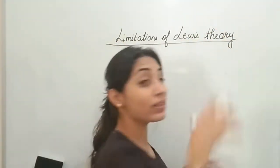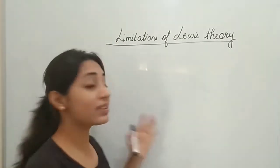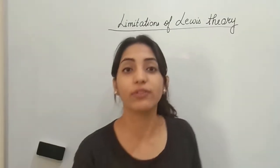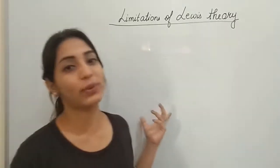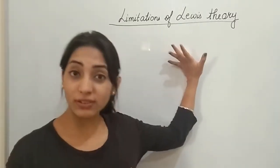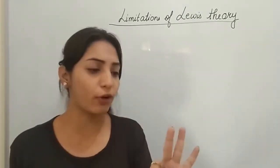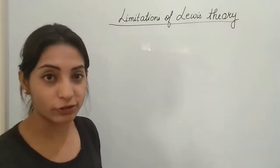You know because of all these limitations which I will be discussing with you today, this theory got failed and we rejected it and moved on with a new theory. The reason why we have to study this is because this question, the limitations of Lewis dot theory or Lewis structures, can be asked in your exams for maybe two marks or one mark question. So let us directly move on to what were the limitations.